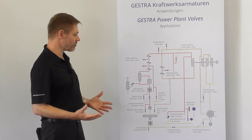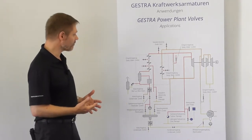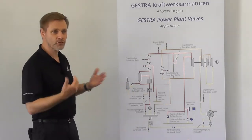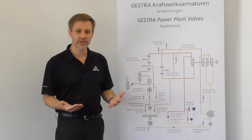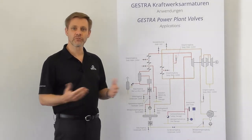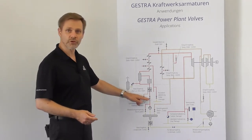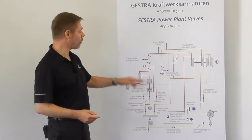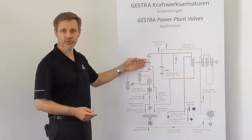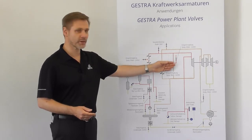Typical applications for our severe service control valves are the blue colored items here. These are valves for steam, water, and flashing water service. Examples for water applications are the feed water control valve or the spray water control valves at the steam coolers between the super heaters or reheaters or at the bypass stations.